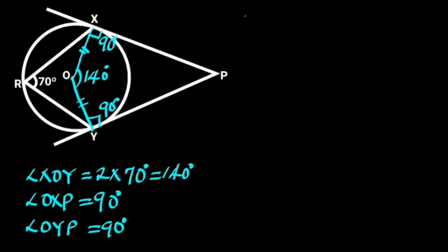Next, let's consider quadrilateral XOYP. In quadrilateral XOYP, angle XPY plus 90 degrees plus 140 degrees plus 90 degrees equals 360 degrees. Reason: the sum of angles in a quadrilateral equals 360 degrees.